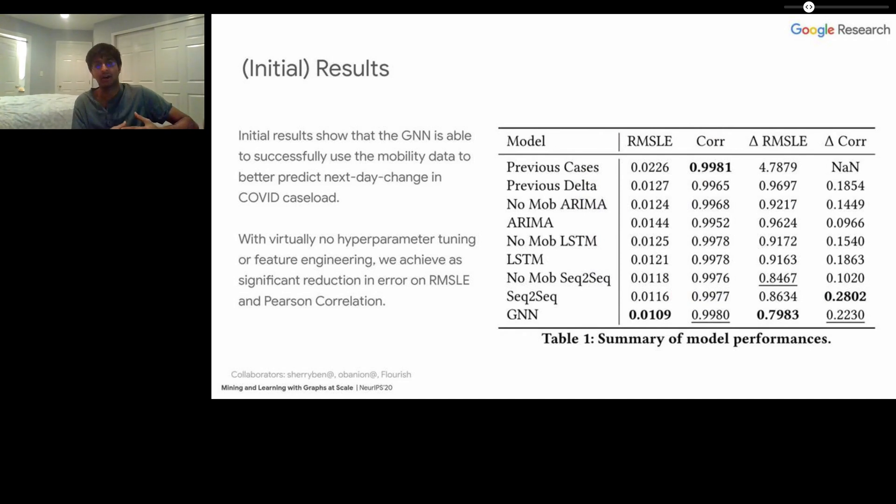What we did was we took a GCN and this graph we had constructed, and we trained a model to predict from the last seven days of data what the next day's change in COVID caseload was going to look like. Initial results show that the GNN was able to successfully use this mobility data to predict the next day change better than a lot of the baselines that were previously being used.